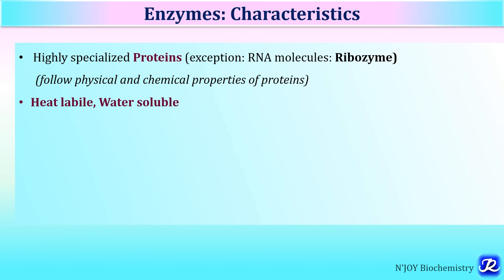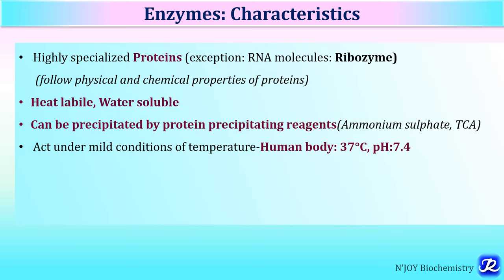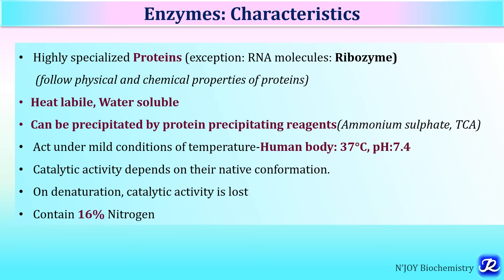Enzymes can be precipitated by protein precipitating reagents like ammonium sulphate and trichloroacetic acid. Enzymes function under mild conditions of temperature; for example, in the human body, enzymes act at an optimum temperature of 37°C and physiological pH of 7.4.